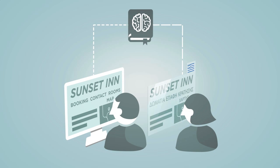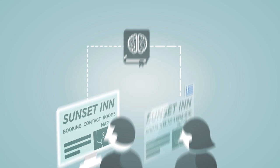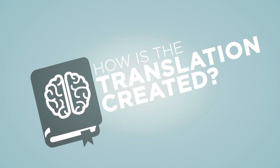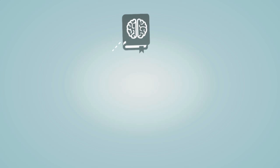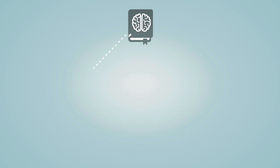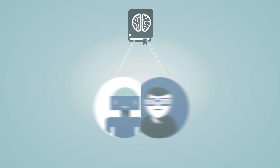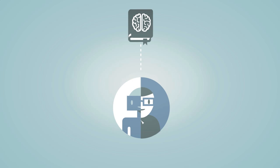The translated text comes from the translation memory that has been uploaded previously by the agency. How is the translated content created? The translation memory uploaded to the proxy may be created by machine translation, professional human translation, or a combination of the two.